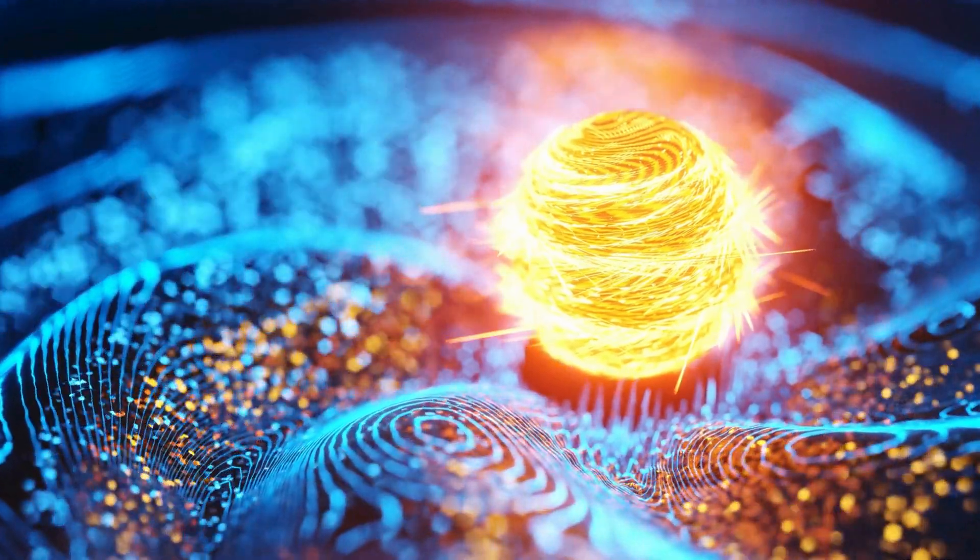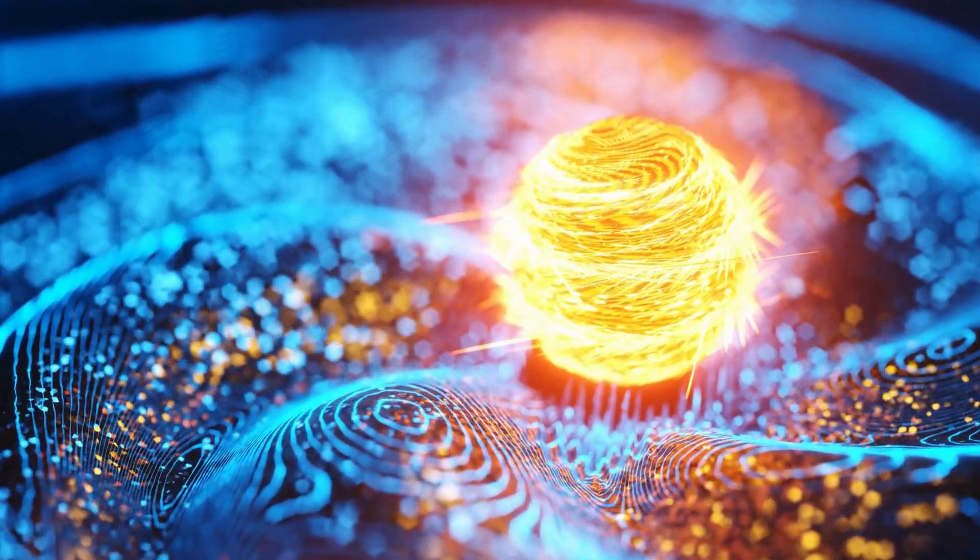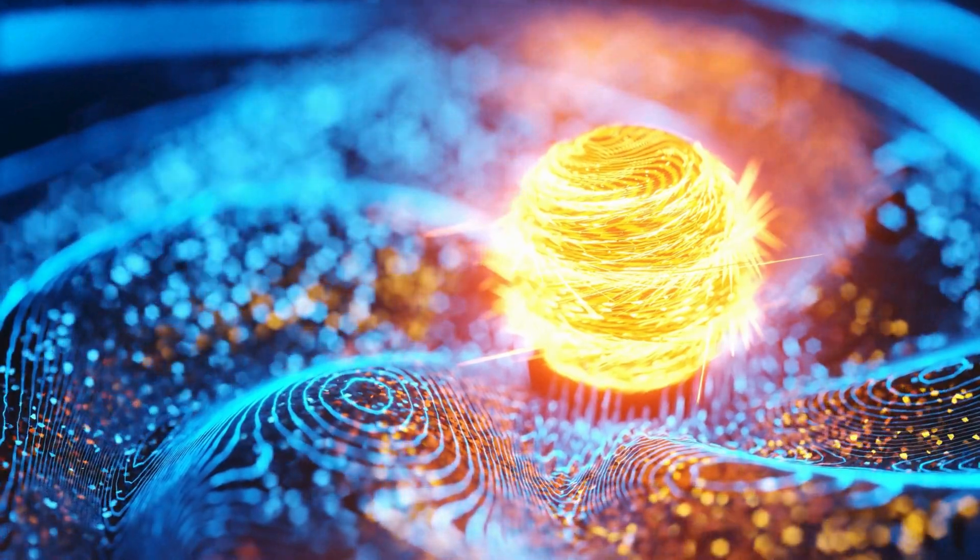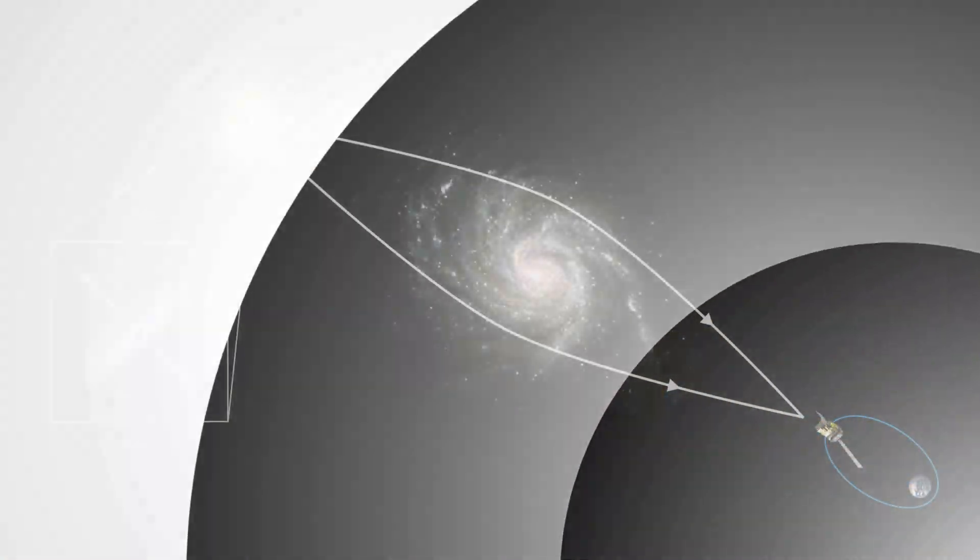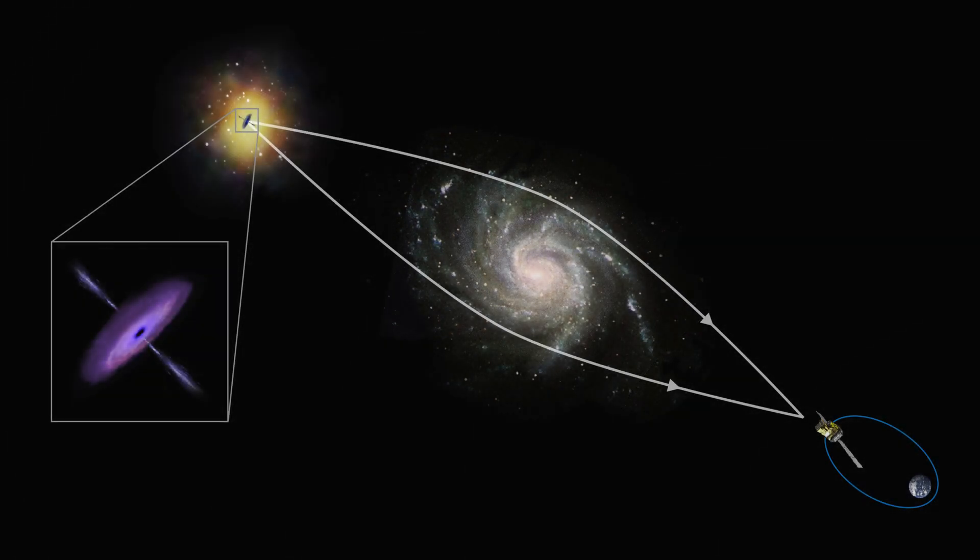Instead of breaking the universe, cosmic strings might impact it by creating gravitational effects. For example, they could cause gravitational lensing, bending light from distant galaxies, or influencing the cosmic microwave background, CMB.